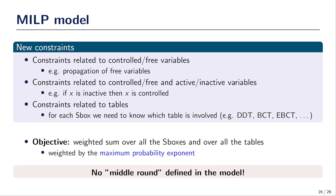The objective function is a weighted count of the different tables, weighted by the maximum probability exponent of each of those tables. An important property of this MILP model is that we did not define any middle round. Both the lower and the upper trails are on the whole cipher — there is no middle round; they are spread over all the cipher. To show that this model is very generic, we found that in some cases it automatically switches to the search of differential characteristics by setting, for instance, the lower trail to zero, so all differences are null in the lower trail.